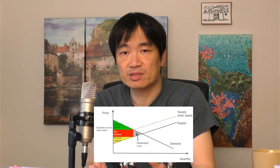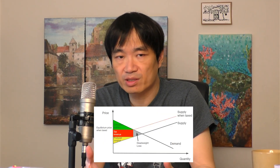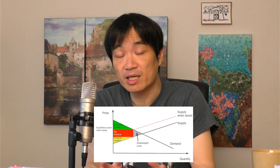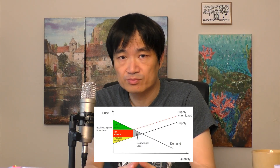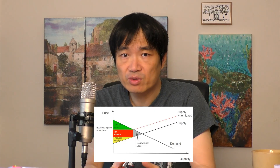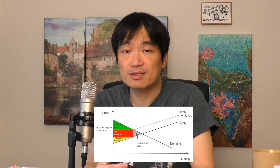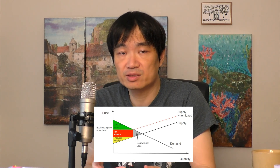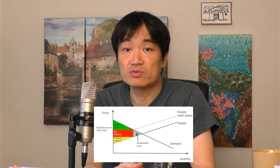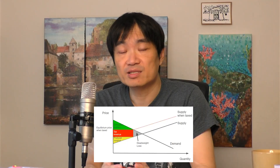You can't use this graph as a scripture or something. Unlike religions, any model requires assumptions. For example, this model requires that a product only affects the producer and the consumer of that product. So when a product affects a third party, the conclusion will be totally different, and you can no longer argue that taxes are inherently bad.